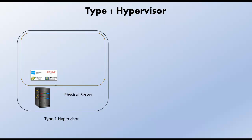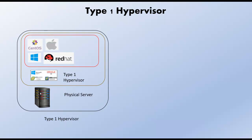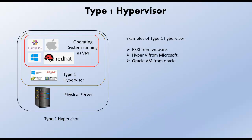The biggest benefit of type 1 hypervisor is that it emulates the physical server so that whatever operating systems we install on it — whether Windows, Red Hat, CentOS, or Mac OS — will feel like they are running directly on the physical server. These operating systems will never know that there is a hypervisor between them and the physical hardware. Some examples of type 1 hypervisors are ESXi from VMware, Hyper-V from Microsoft, and Oracle VM from Oracle.